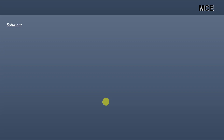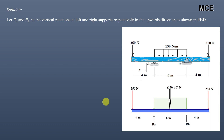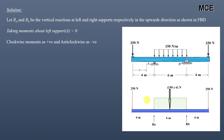First we will find the reactions of this beam. We assume that RA and RB are the vertical reactions at the left and right supports in the upward direction as shown in the free body diagram. We will take moment about the left support equal to zero, assuming clockwise moments are positive and anti-clockwise moments are negative.